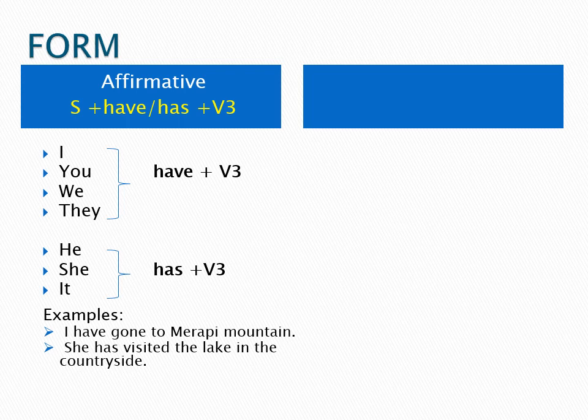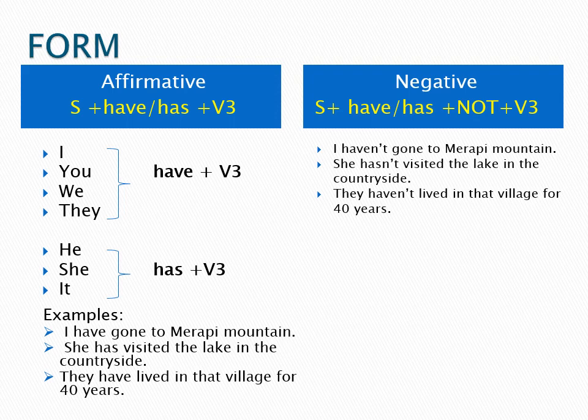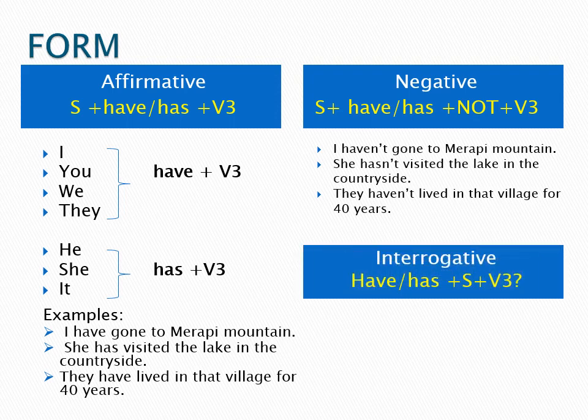Examples of affirmative: I have gone to Merapi mountain. She has visited the lake in the countryside. They have lived in that village for 40 years. For the negative form: subject plus have or has plus not plus verb three. Examples: I haven't gone to Merapi mountain. She hasn't visited the lake in the countryside. They haven't lived in that village for 40 years.